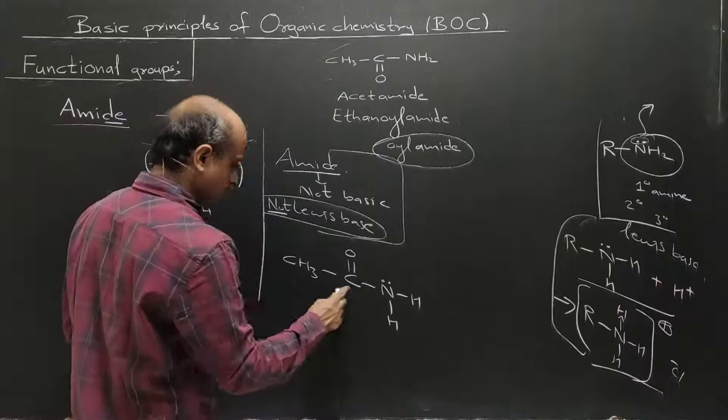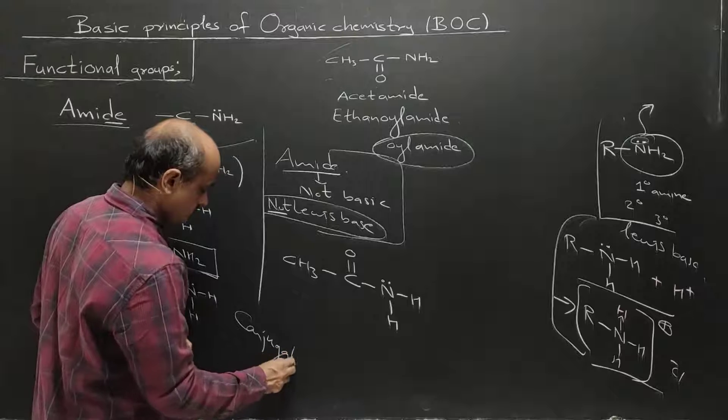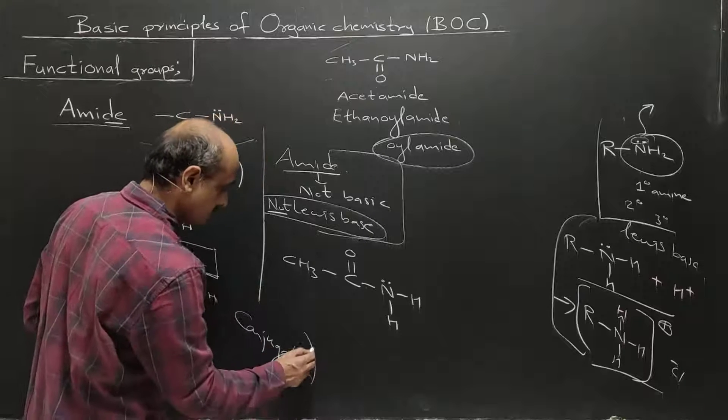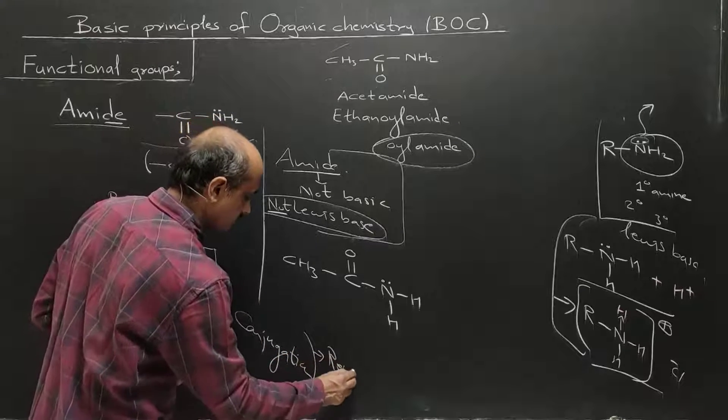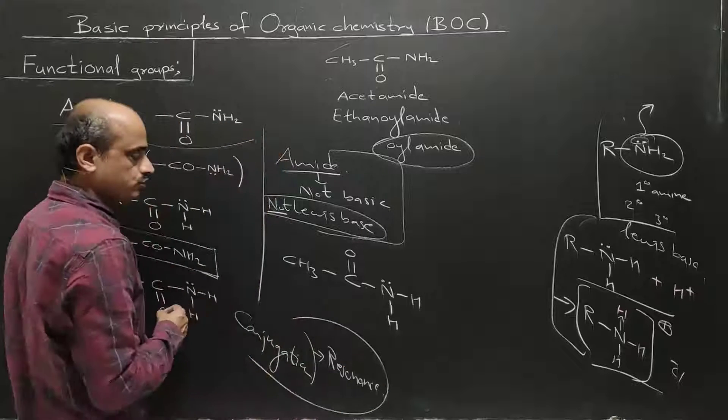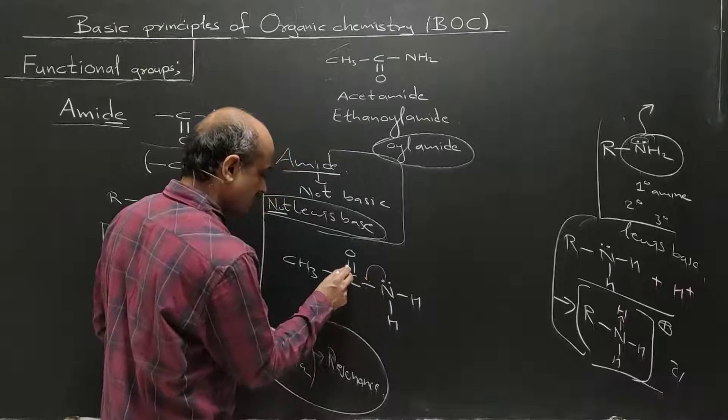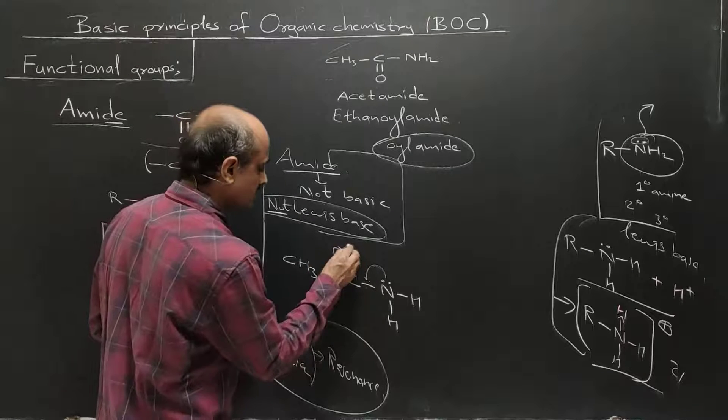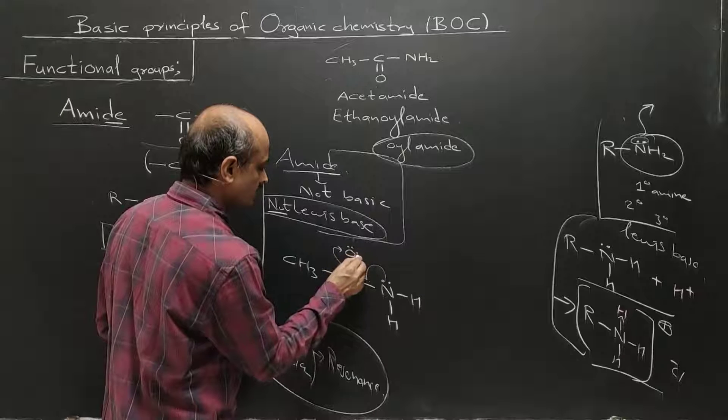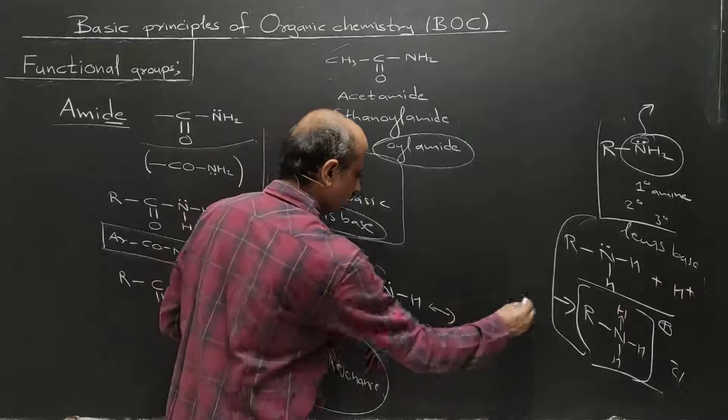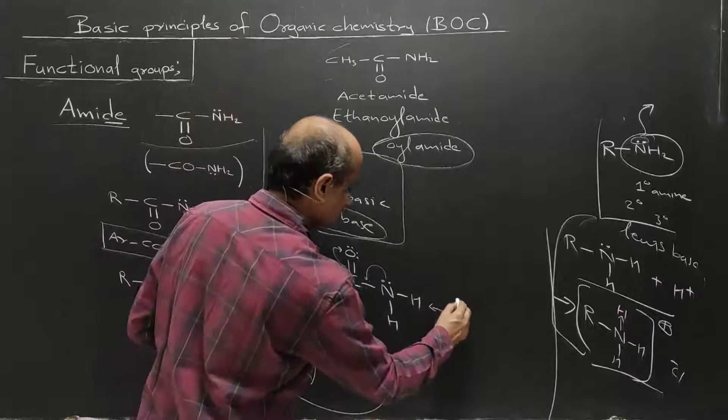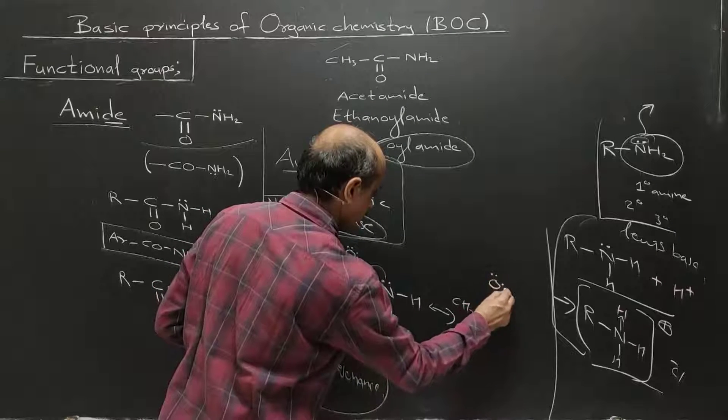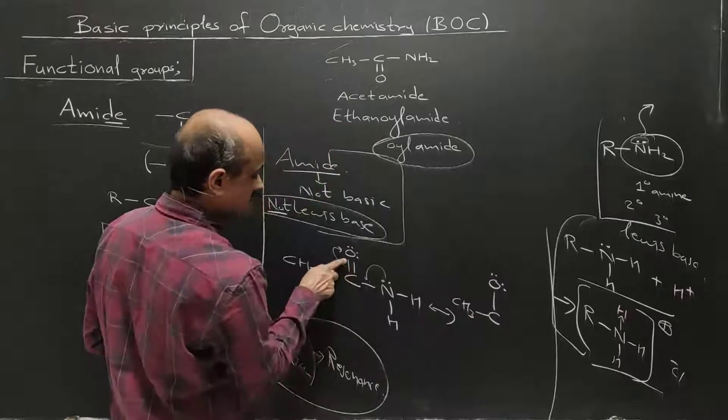There is a conjugation. Lone pair, sigma bond, pi bond, pi bond. And because of conjugation there will be resonance. Resonance, the lone pairs, the pi bond is shared. And pi bond, the pi bond which is transferred.